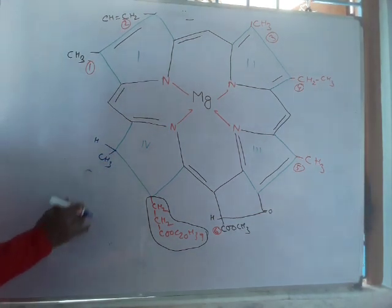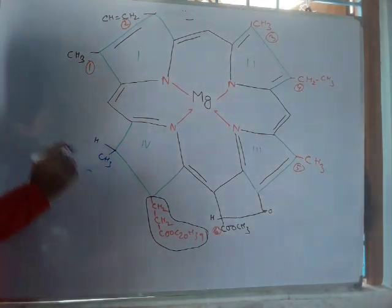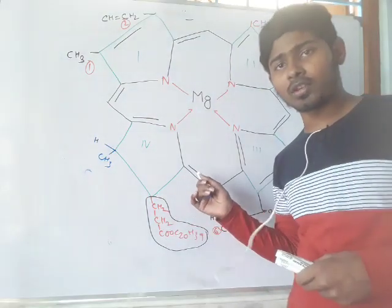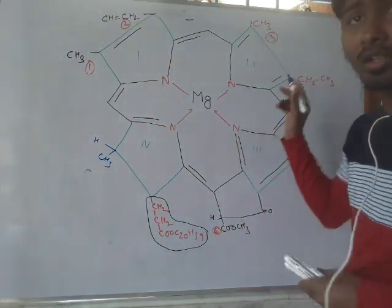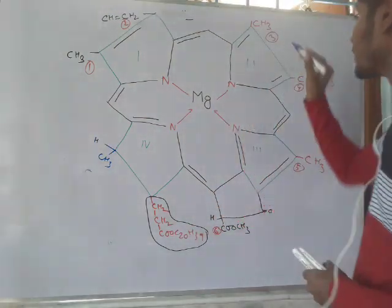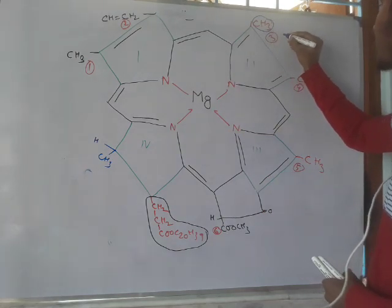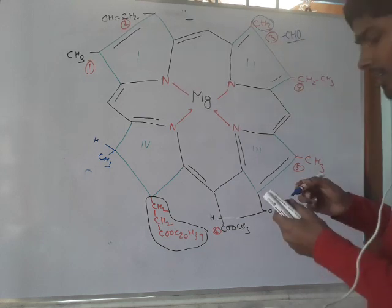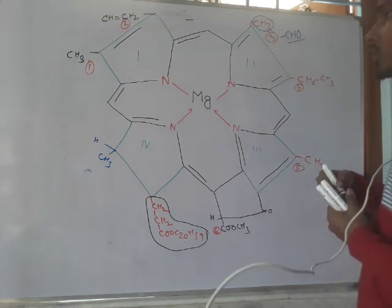So this is the structure of chlorophyll A. If you want to draw the structure of chlorophyll B, just remove this CH3 or methyl group and replace with an aldehyde and it will be chlorophyll B.